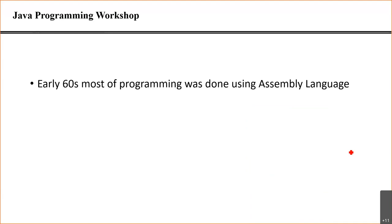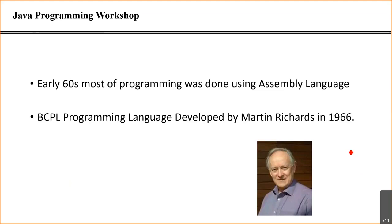In the early 1960s most programming languages were assembly language, very basic. Then in 1966, Martin Richards developed a programming language known as BCPL — Basic Computer Programming Language. All languages, especially C, C++, and Java, can trace their lineage to BCPL. Ken Thompson took BCPL, scaled it down, and created a scaled-down version he called B.